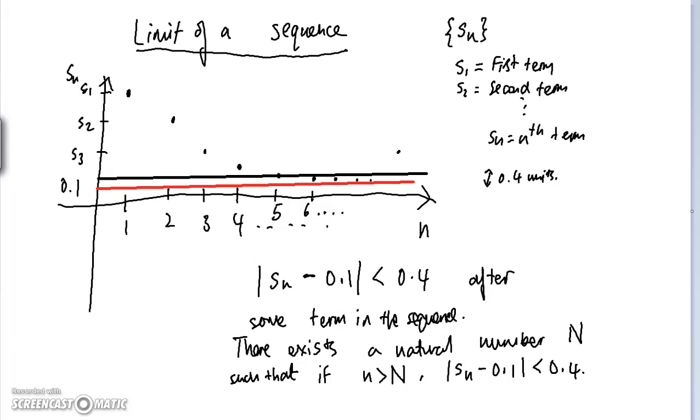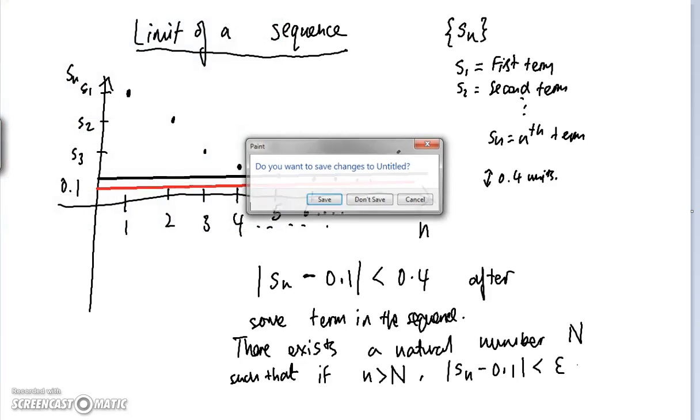So, in fact, I can actually replace 0.4 with any positive number. I can replace it with epsilon. So, we now can move on to the general definition of convergence of a sequence, or the limit as N approaches infinity of a sequence.